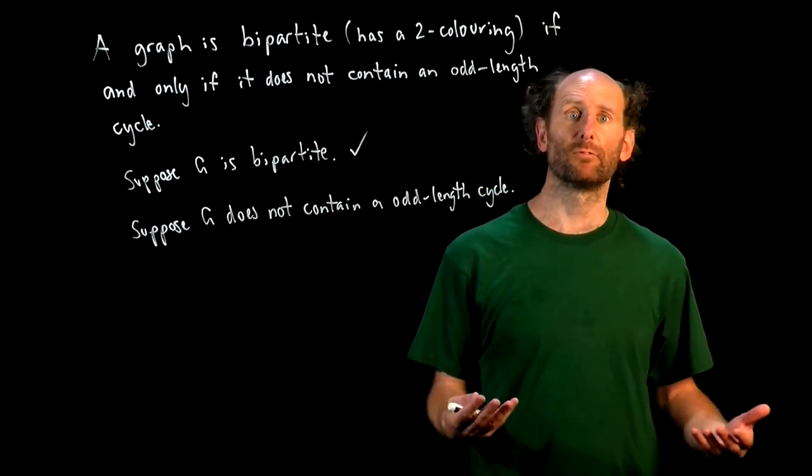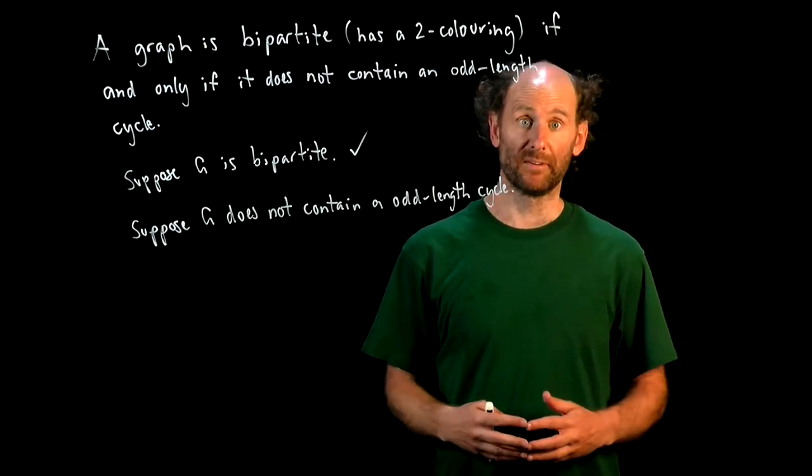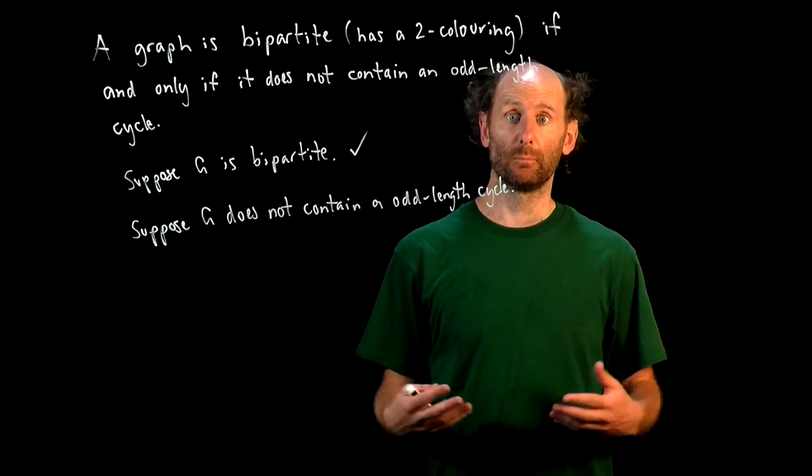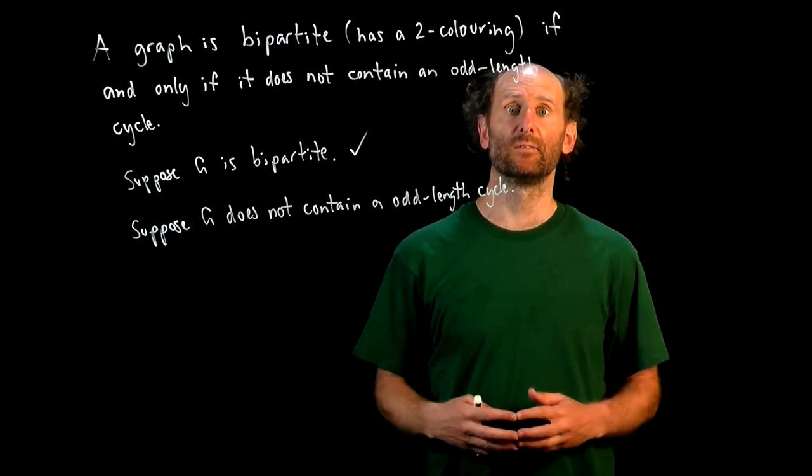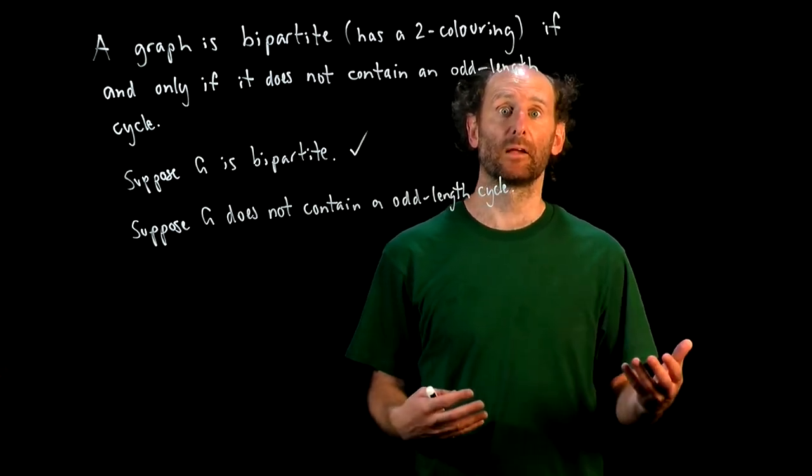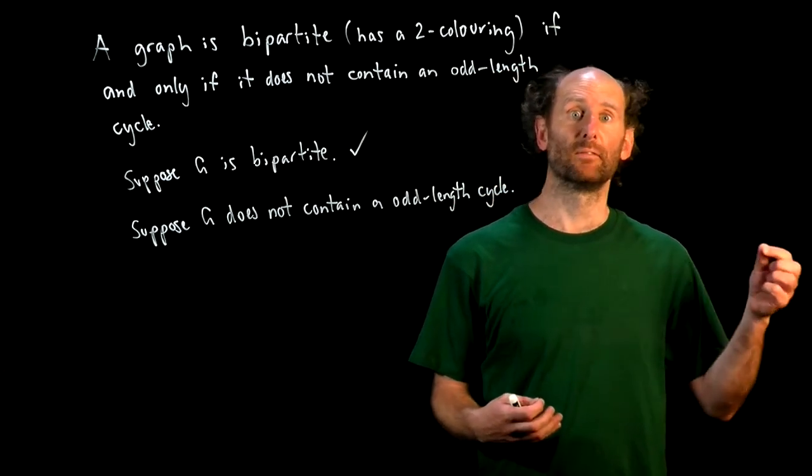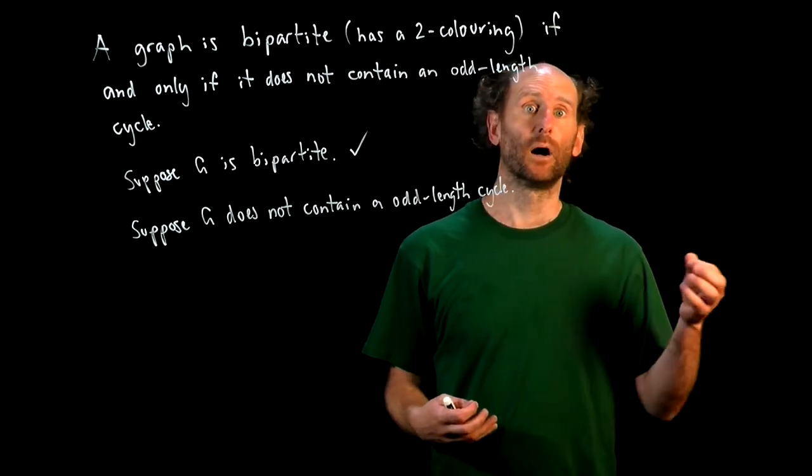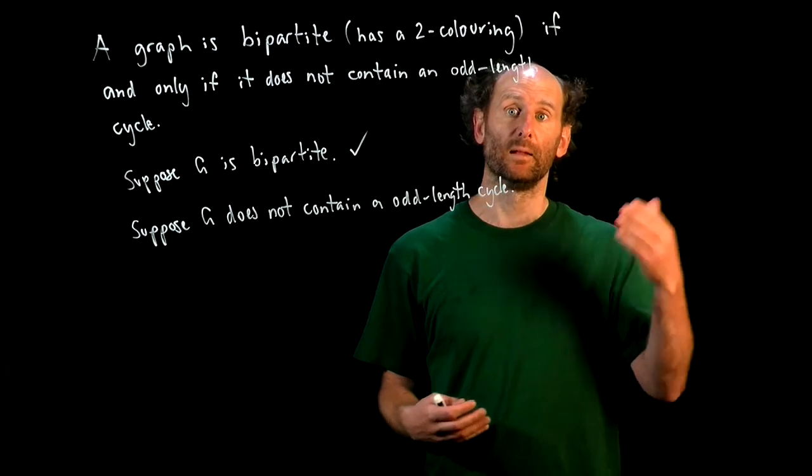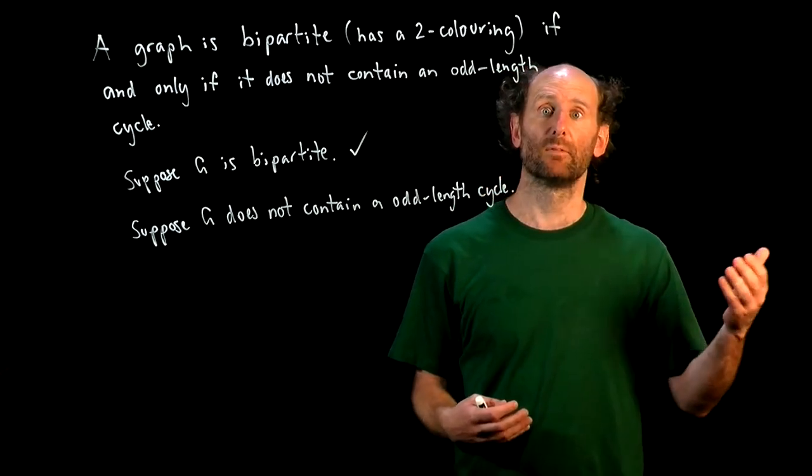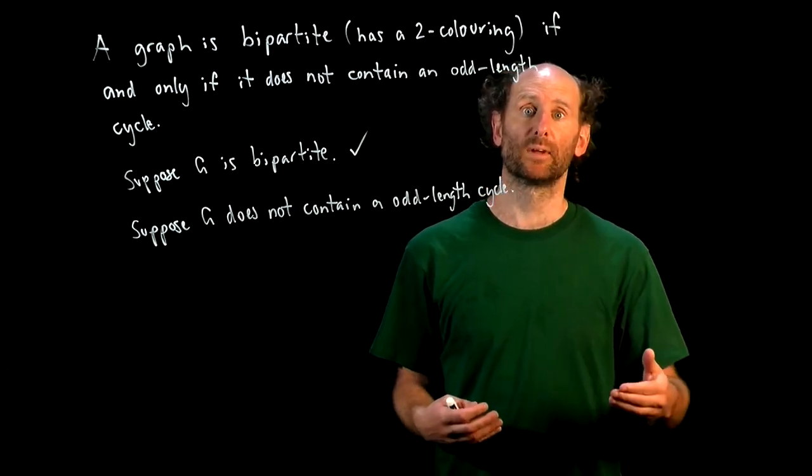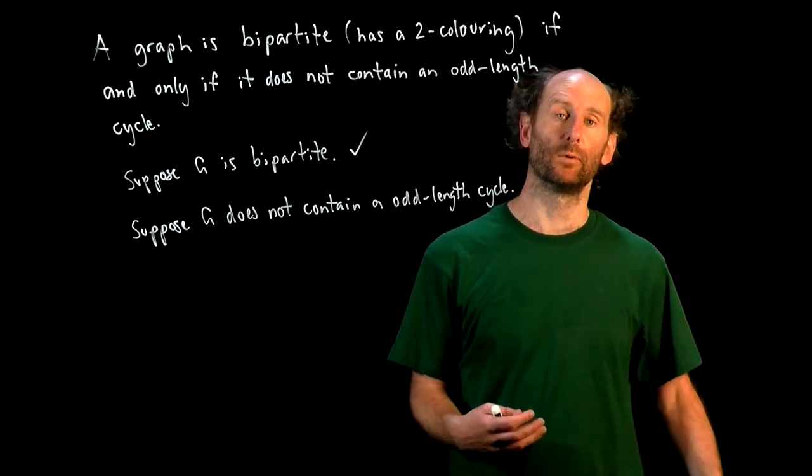Let's think of running BFS on G, and then we'll color the vertices of G, depending on their level in the graph. If the vertex is in level i, we'll color it i mod 2. So that level 0 is color 0, level 1 is color 1, level 2 is color 0, level 3 is color 1, and so on.